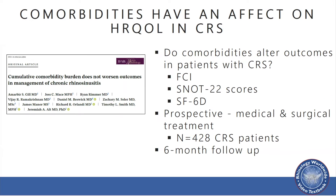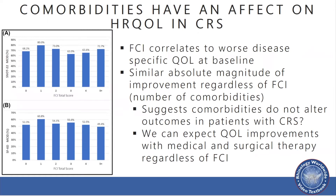A total of 428 patients were enrolled in this study with six-month follow-up data. The data demonstrated that FCI correlates to worse disease-specific quality of life at baseline, but showed similar absolute magnitude improvements regardless of the FCI — i.e., number of comorbidities. This suggests that comorbidities do not alter outcomes in patients with CRS, which was a little surprising. However, we can expect quality of life improvements with both medical and surgical therapy regardless of the FCI score.